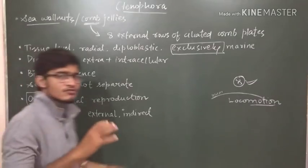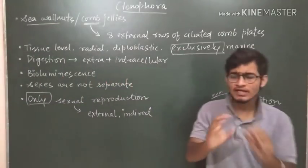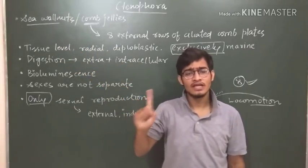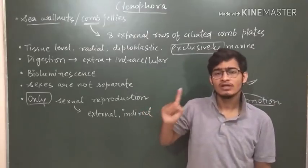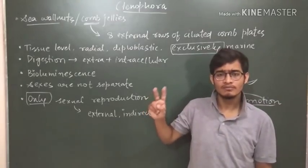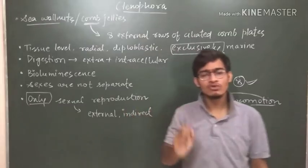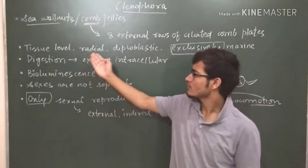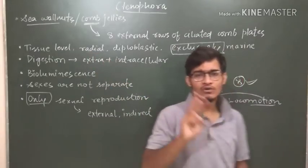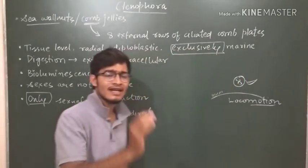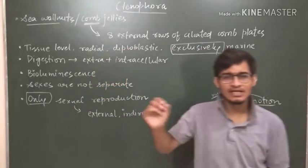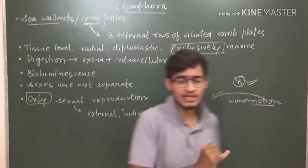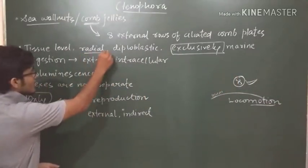After that, there are some characters which we know very well. It is having tissue level of organization. The Porifera has cellular level of organization, cell aggregated plan. After that, the Ctenophora, the Cnidaria is having tissue level, and the Ctenophora is also having tissue level plan. After that, radially symmetrical. We know very well that there are only three phylums which have radially symmetrical organisms.